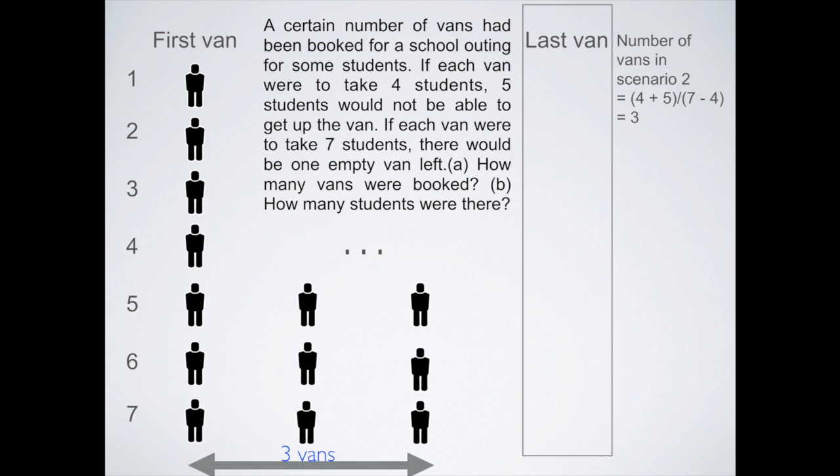So three vans in scenario two. What is the actual number? You have to add back the empty van. So if we know that, then we can use either scenario to find the number of students.